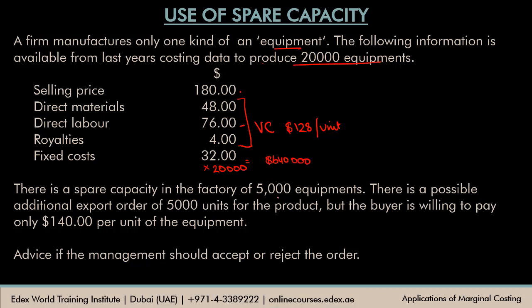There is spare capacity in the factory for 5,000 equipments — out of 20,000, 5,000 equipments are not being produced. There is a possible additional export order of 5,000 units, but the buyer is willing to pay only $140 per unit. If you compare $140 to the normal selling price, it is lower. Using marginal costing concepts, you always have to look at the contribution. Comparing the variable cost of production, $128, to the new selling price of $140, every additional unit sold generates a positive contribution of $12 per unit.